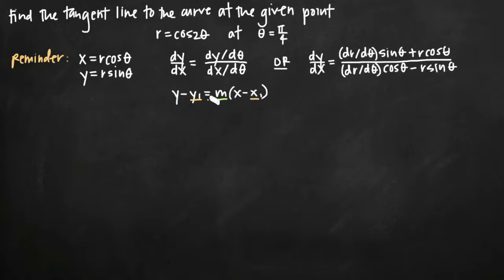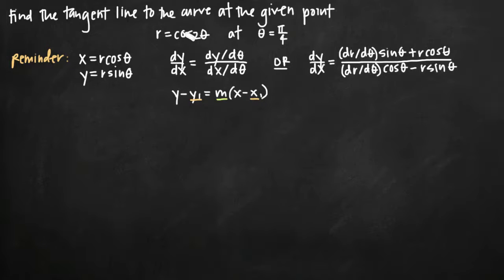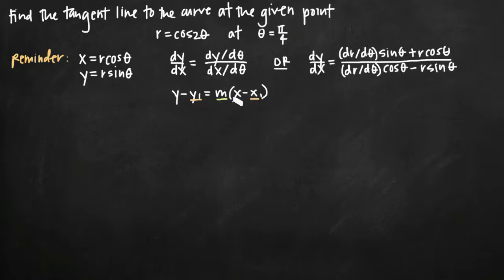It's important to realize that this formula for the equation of the tangent line is in Cartesian coordinates — we have x's and y's — but we're starting from a polar curve, which is in terms of r's and thetas. So we're going to need to transition our problem from r's and thetas to x's and y's, first with the slope m, and then with the point x sub 1, y sub 1.